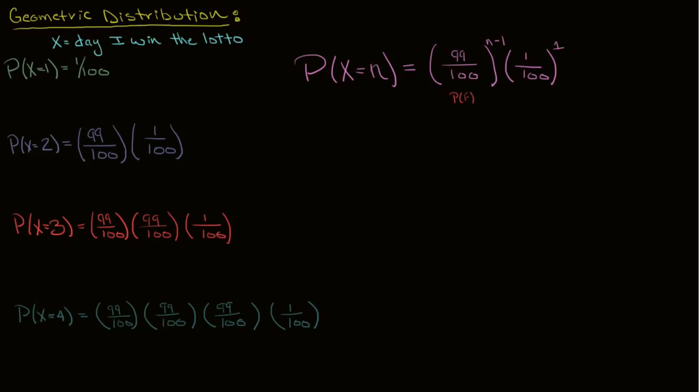Now we can adjust this formula to be general for any geometric distribution. Our 99 over 100 is our probability of failure. Our 1 over 100 is our probability of success. And we'll steal some of the notation straight from the binomial distribution that we covered in the last lessons, and our probability of success we can call lowercase p.